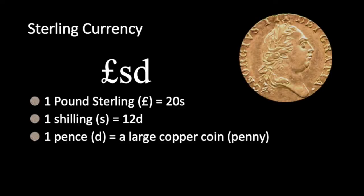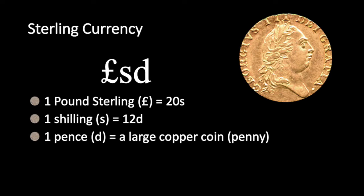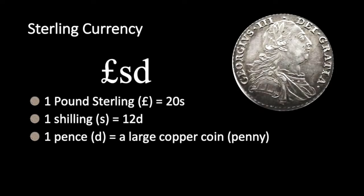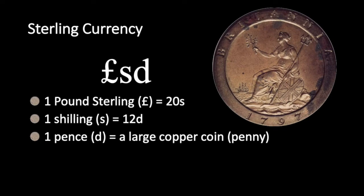British currency consisted of the pound divided into 20 shillings. The gold guinea was originally worth one pound, but during the late 18th and early 19th centuries it was worth 21 shillings because of increases in the price of gold. The shilling — one-twentieth of a pound — was a silver coin just a little bit smaller than a modern US quarter. The shilling was itself subdivided into 12 pence, represented by a copper penny. There were 240 pence in a pound.